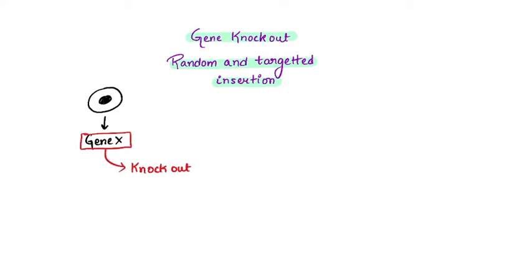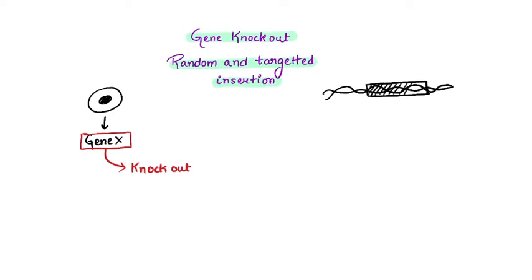That's how you can find out the function of gene X — by studying the changes before and after the knockout. Now, how do we do this gene knockout? We use something called random and targeted insertions. Let's say this is the DNA of the cell, and this here is the gene of interest that we want to talk about.